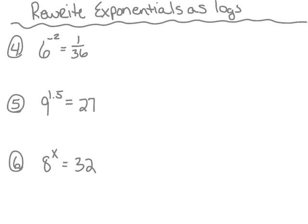Number 4, we've got the exponential 6 to the negative 2 power is equal to 1 over 36. We're going to rewrite this as a log. The base for this one is 6 — remember, that is a subscript 6. The argument is 1 over 36, and it equals to the exponent, which is negative 2. So we read this as log base 6 of 1 over 36 is equal to negative 2.